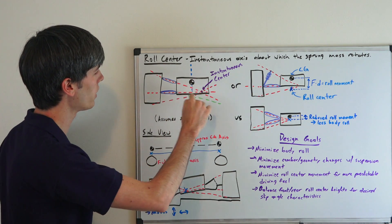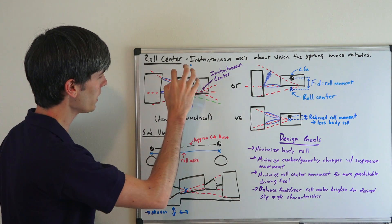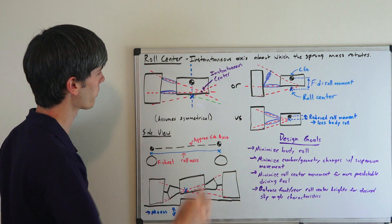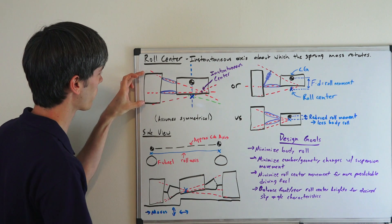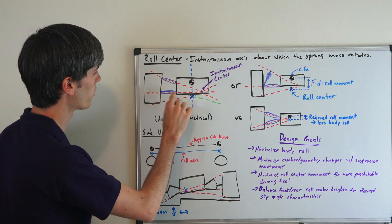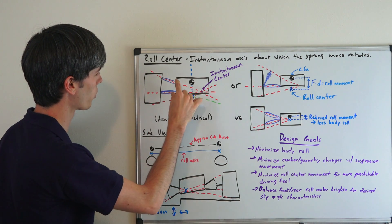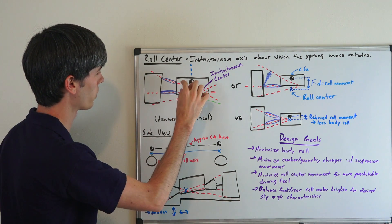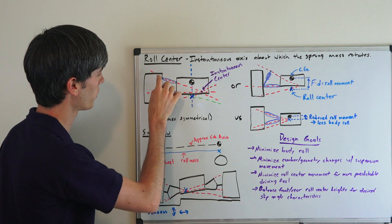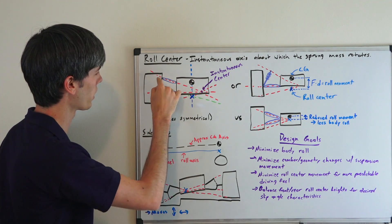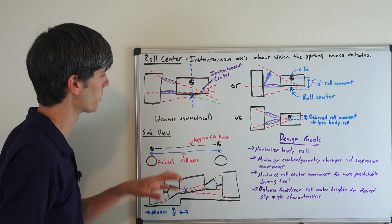So basically what we have here is the body of the vehicle, here we have the tire, and then you've got this suspension linkage. You've got these joints of the suspension on both the chassis and then for connecting with the wheel.